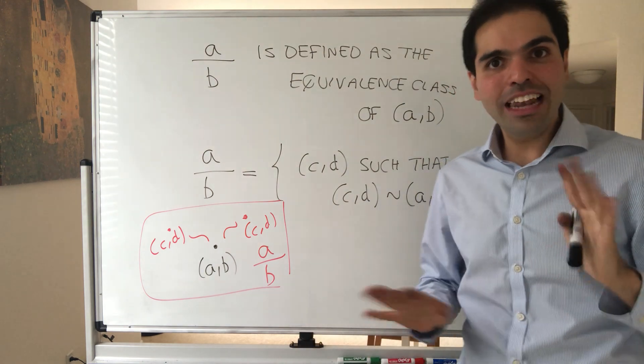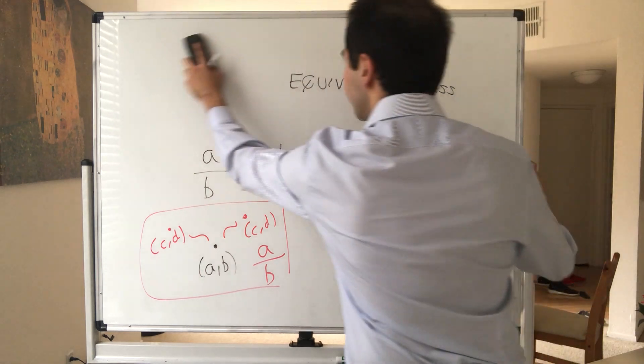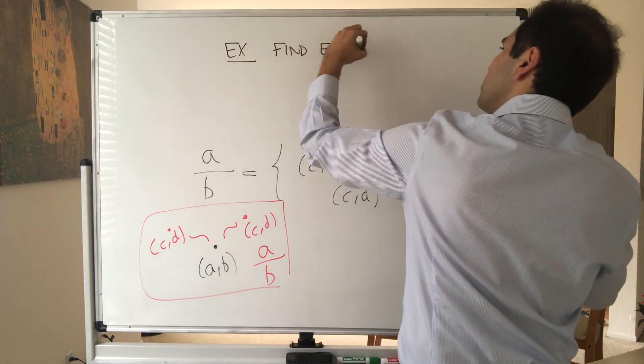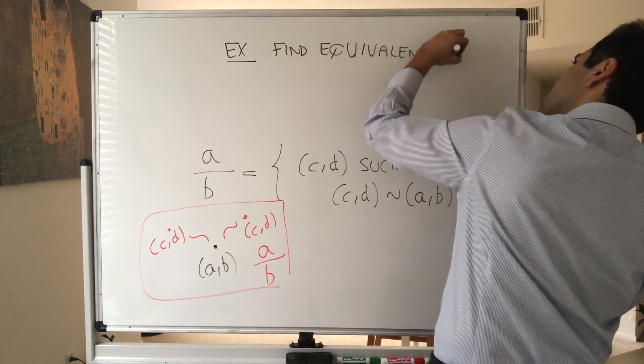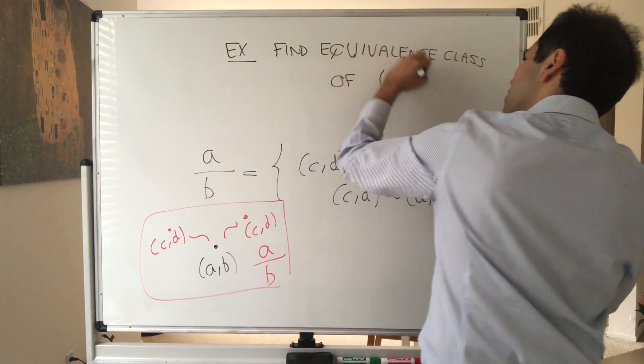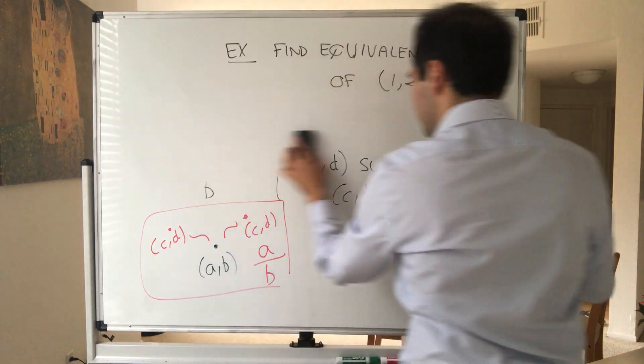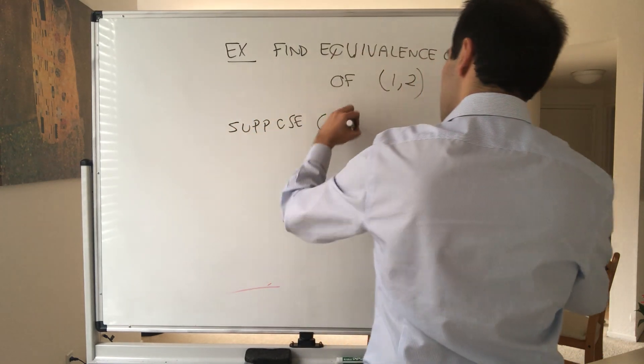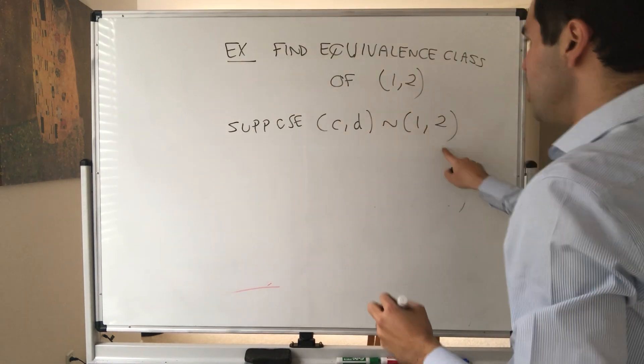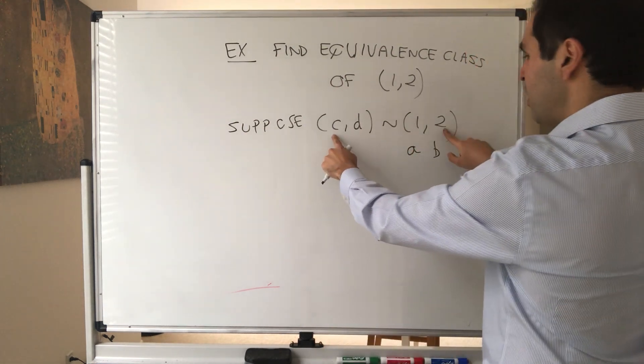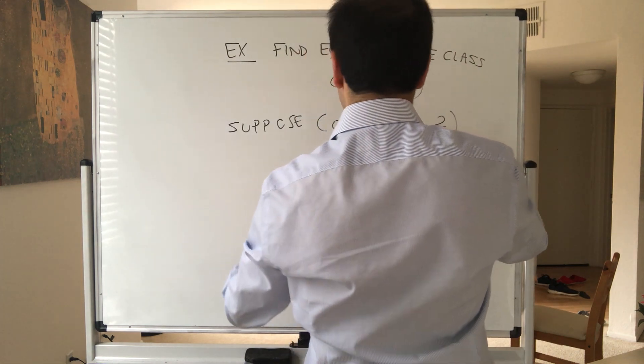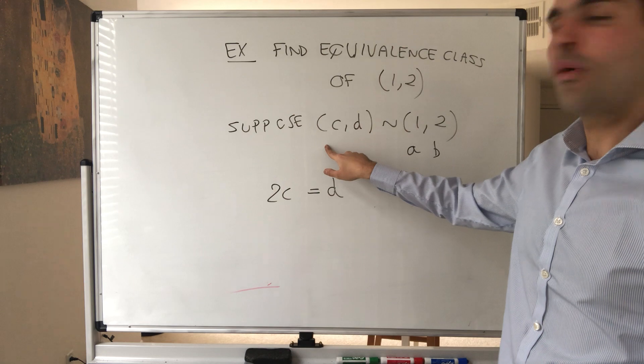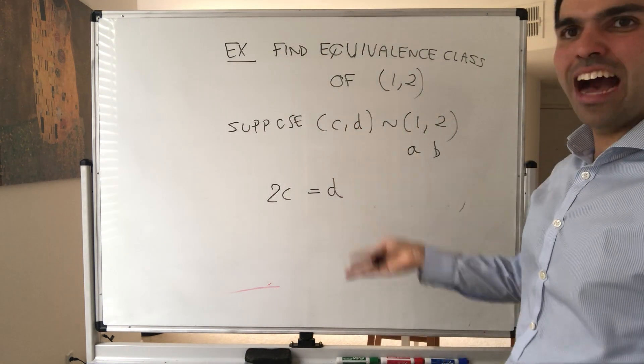Now I know it looks very esoteric, but let me give you a specific example. So for instance, let's find the equivalence class of (1, 2). So what does that mean? Suppose (c, d) is related to (1, 2). This is (a, b) if you want. So again, what this means is the cross terms are the same. So C times 2, so in other words 2C equals D. So in other words, what this means is D is always twice times, so the second term is always twice times the first term.